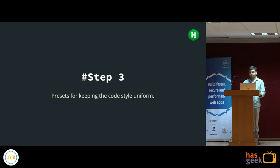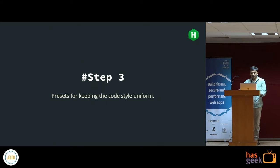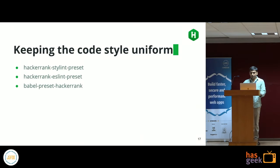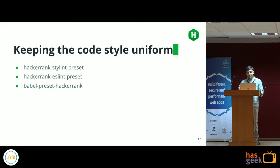While breaking all applications and modules, we wanted to keep our code style uniform across all modules so a developer switching between different repos wouldn't feel like they'd moved to a different company. To keep code style uniform, we created HackerRank-specific presets: a stylelint preset for CSS files, an ESLint preset for JavaScript, and a Babel preset so everyone uses the same level of JavaScript features across all modules and apps.